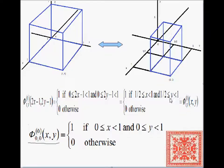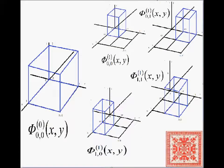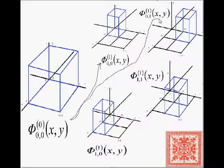By replacing x with two x minus one and y with two y minus one, we get a smaller, more sensitive scalar. Finally, we scale the basic scalar to a more refined scalar in the bottom left corner. So we've taken the basic scalar phi at frequency zero and obtained four finer scalars — basic step functions in the two-dimensional domain at frequency one.